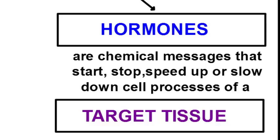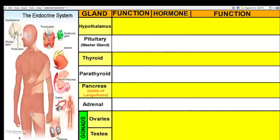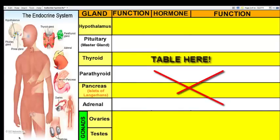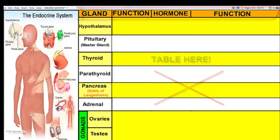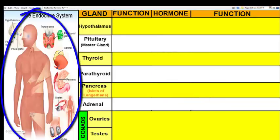Let's take a look at the important glands and hormones of the endocrine system. Here we have a table with the different glands and their functions, the hormones and the functions of those hormones. On the left is a picture of the human body with the different glands highlighted that are part of the endocrine system.